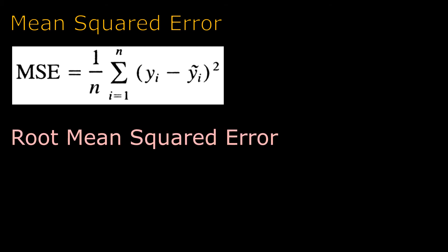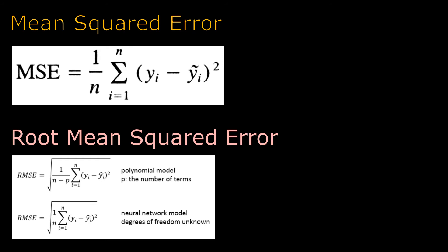This is where root mean squared error comes in. All you really do is take the square root of the mean squared error, and thus you have root mean squared error. Typically, you would use mean squared error as a loss function and root mean squared error to evaluate and report performance.